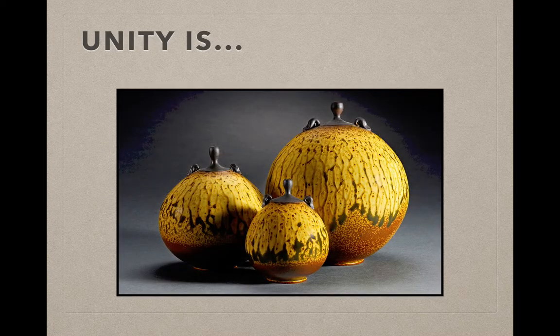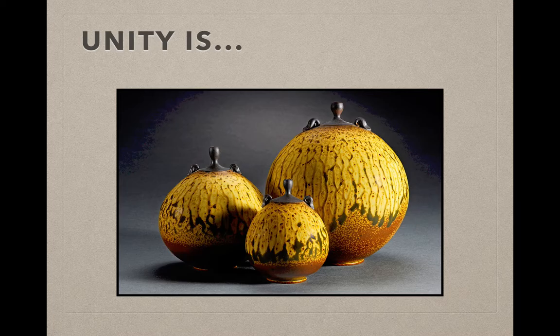So in this ceramic example, I have unity between the three pieces because not only are they colored the same, I'm using the same type of glaze, I'm applying it in the same manner, and the shapes are actually identical or similar to each other. They're made out of the same type of clay. Because it's all made from the same materials, those pieces are unified.